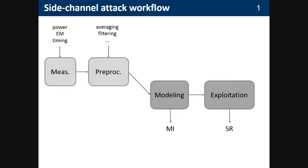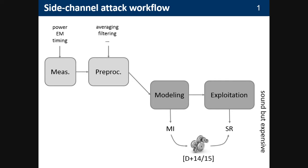If you try to quantify this, we can do so more or less precisely. For example, we can assess the quality of a model with any statistical distance, but frequently we use mutual information. We can quantify the success rate against key recovery with exactly that success rate metric. Over the last years there has been quite some work in ensuring these things can be connected — bounding the success rate based on some estimation of the mutual information — as in the papers by Alexandruc and co-authors.